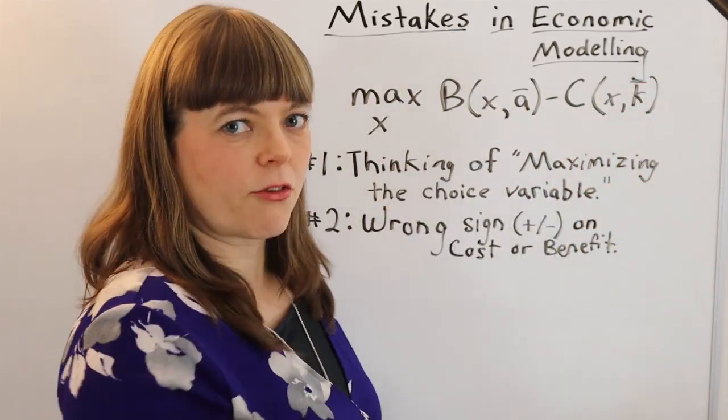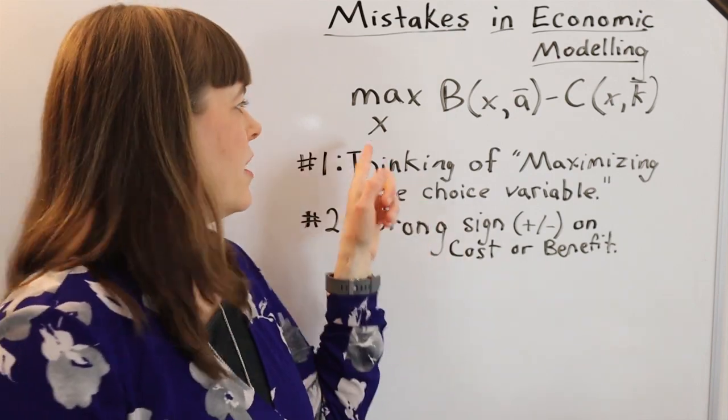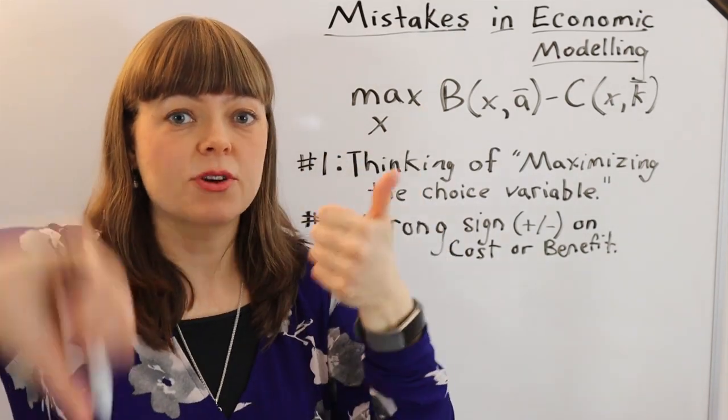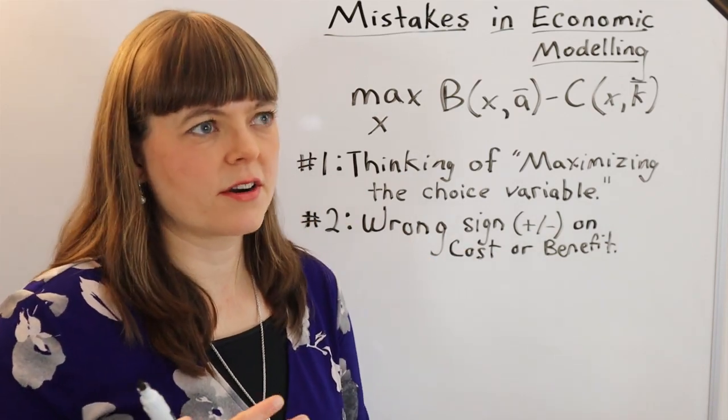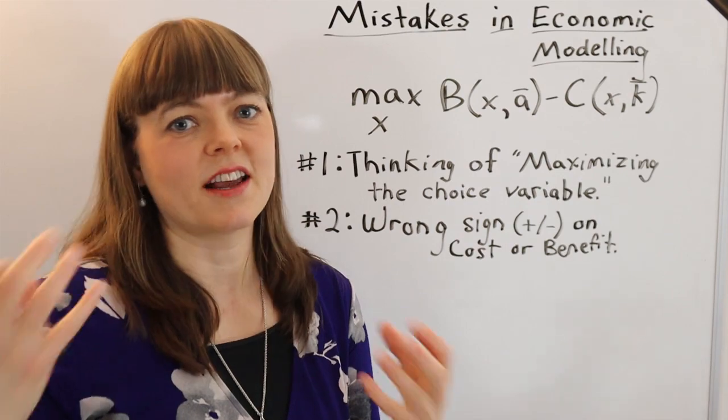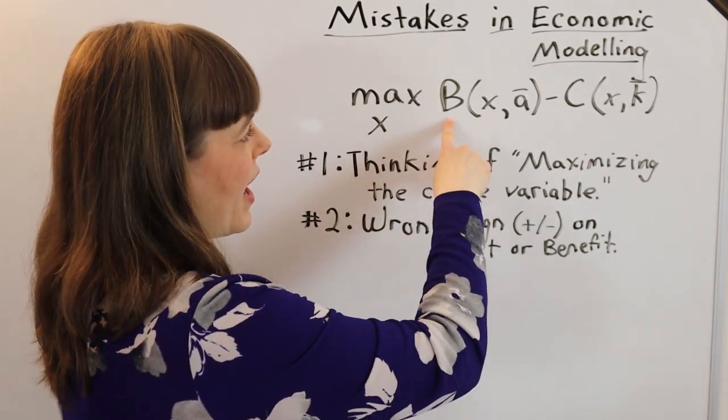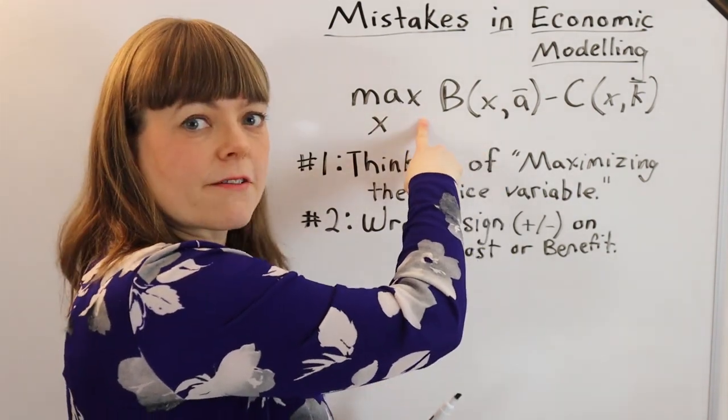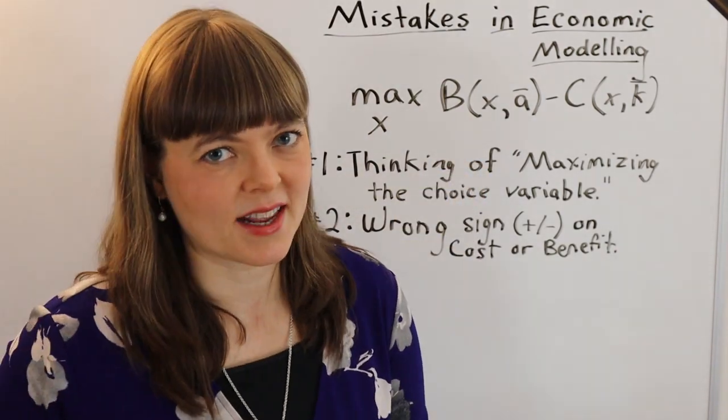But sometimes you have something where by increasing your choice variable, that's going to decrease a bad thing. In which case, those are the cases where students will oftentimes get the sign on this wrong. So when you're checking a model, just go through and ask yourself, is this a good thing or a bad thing? And does the sign in front of it match whether this is good or bad? And that will help you fix that mistake.